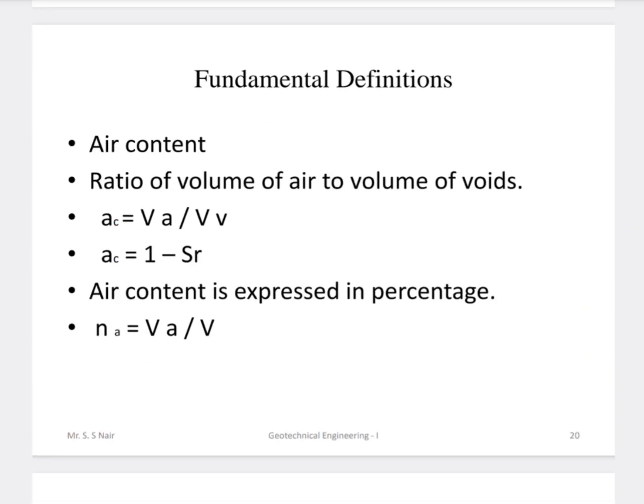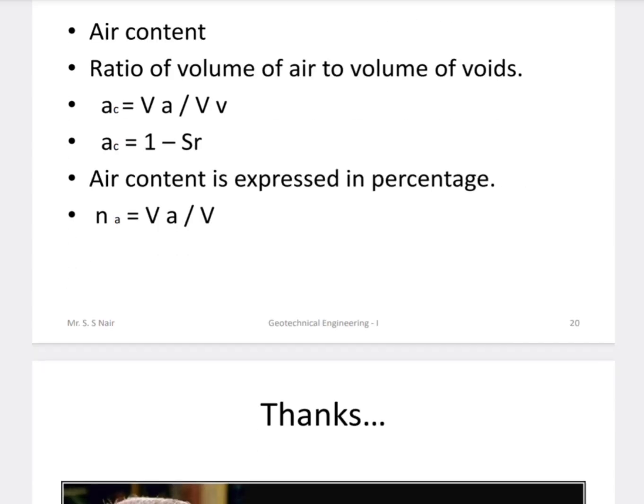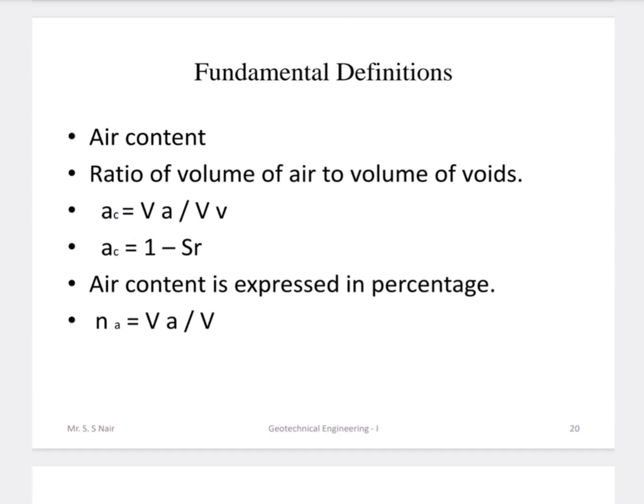Air content is the ratio of volume of air to the volume of void. Also, 1 minus degree of saturation gives you the air content. Air content is expressed as a percentage: volume of air divided by total volume gives you the air content in percentage.